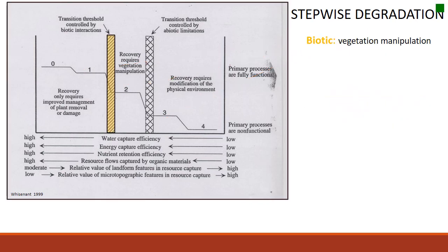Here are examples of when we might cross thresholds. Transitioning from community state one to two would be a biotic threshold — meaning living. To get back into plant community one from two, we'd have to do some kind of vegetation manipulation, such as using herbicide to remove weeds or targeted grazing to reduce unwanted species. The next degradation is an abiotic threshold — meaning non-living — which requires some kind of physical manipulation, such as bringing in topsoil after significant erosion, which requires far more resources.